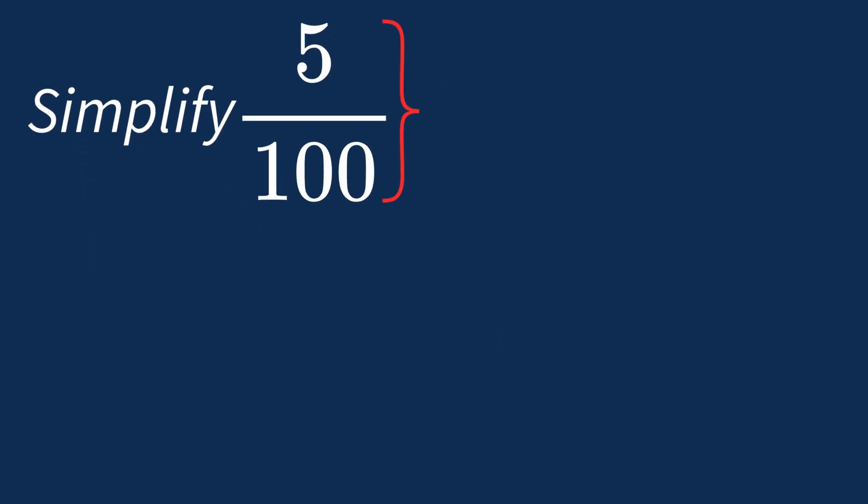To simplify 5 over 100, we need to look for the common factors between the top number, the numerator, and the bottom number, the denominator.